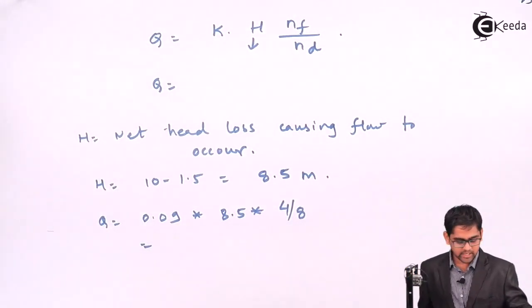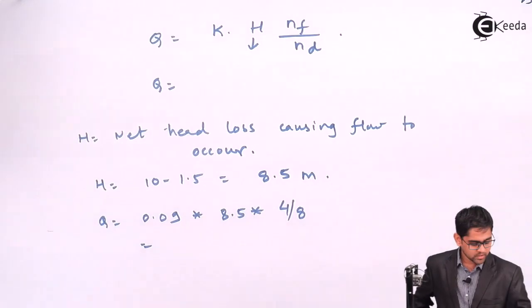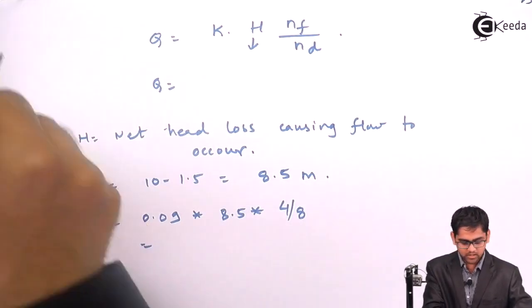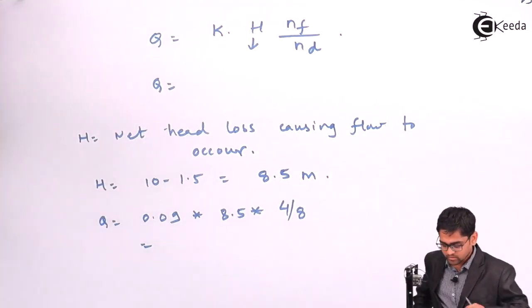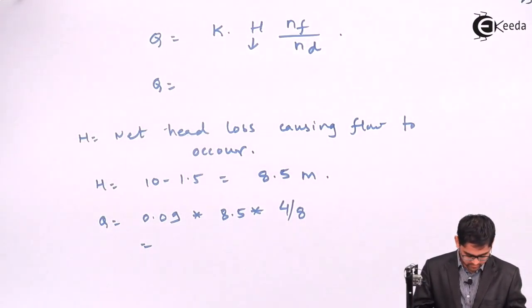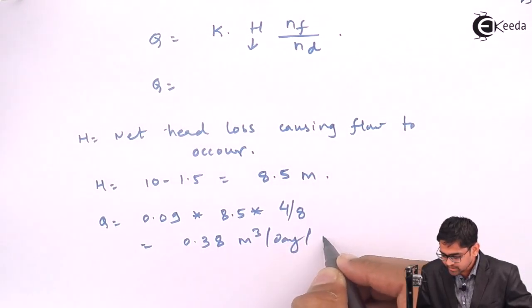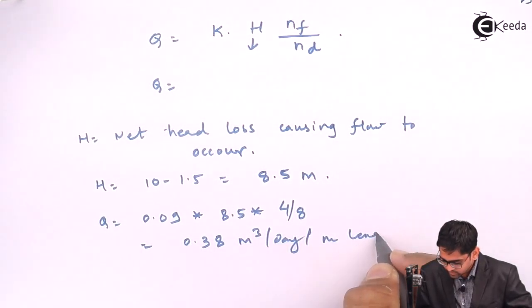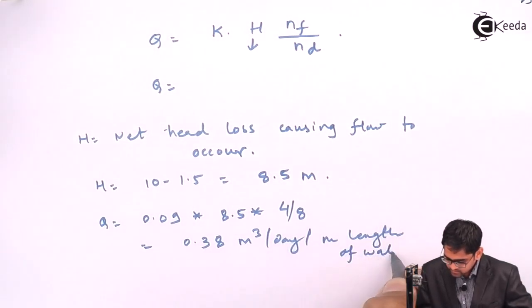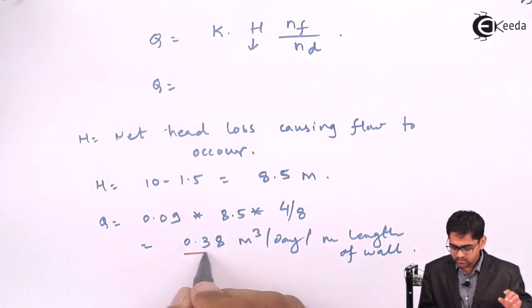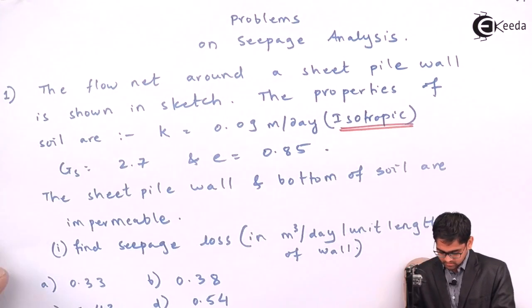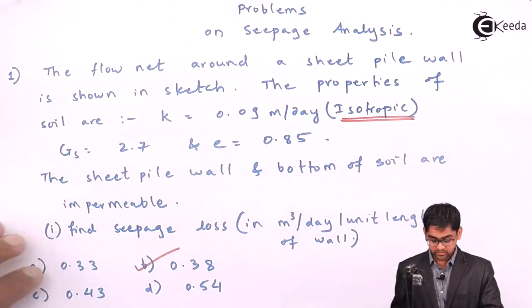If you punch all the numbers, you will get q equals to 0.38. 0.09 into 8.5 into 0.5, it will be 0.38 meter cube per day per meter length of wall. This is the final answer. Option B is matching.